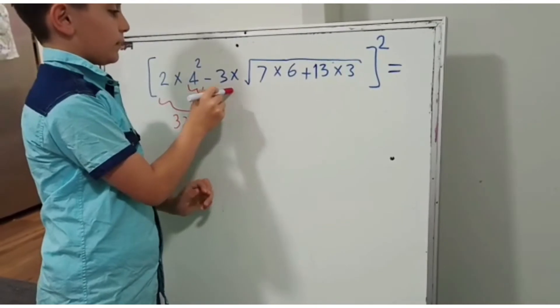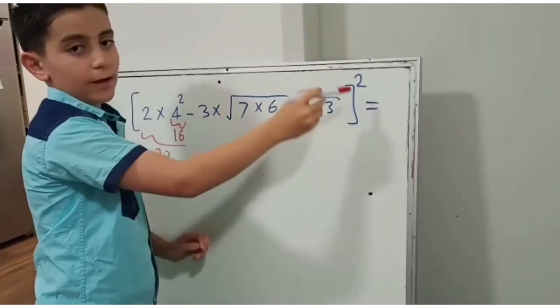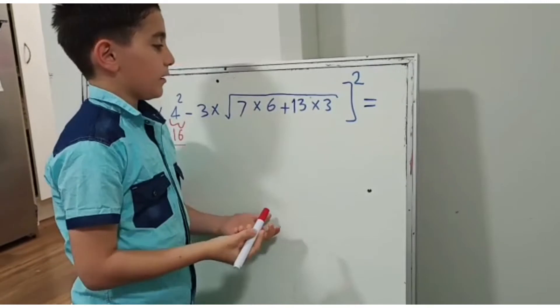Now we don't do the 3 times yet because we haven't solved the under root. 7 times 6 equals 42.